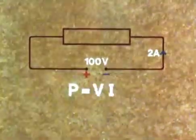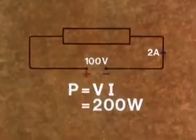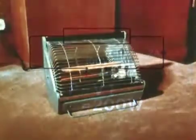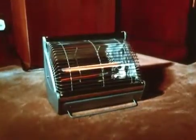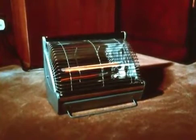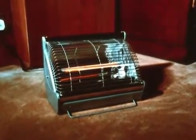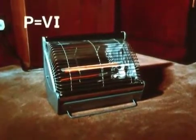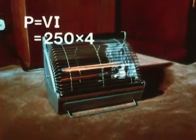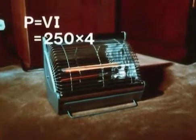For example, in this circuit V equals 100 volts and I equals 2 amps, so the power absorbed P equals VI, that is 200 watts. Or again, this electric heater is connected to a voltage supply of 250 volts and is passing a current of 4 amps. The power absorbed by the heater is 250 times 4, that is a thousand watts, 1 kilowatt. It's a 1 kilowatt heater.